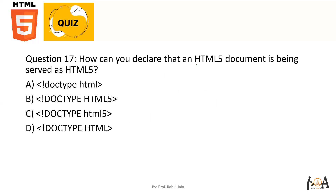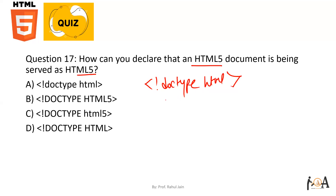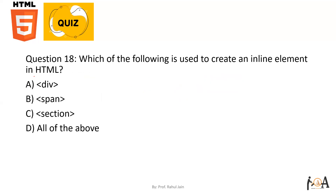Question number seventeen: how can you declare that a document is an HTML5 document? You simply write '<!DOCTYPE html>' — the exclamation mark, DOCTYPE, and then html. This is typically the first line of your HTML code, and it specifies that the document is an HTML5 document. Option A is the correct answer.